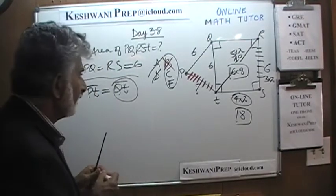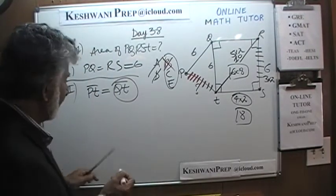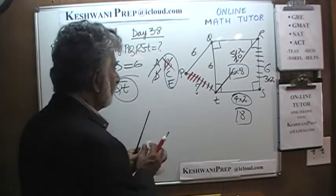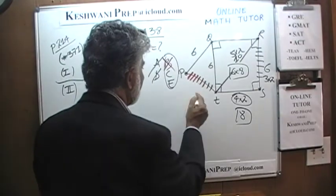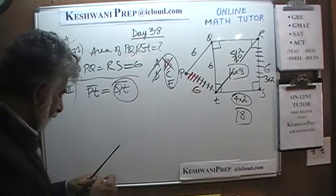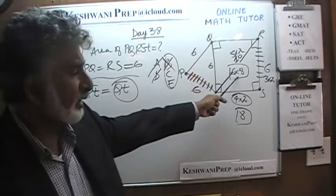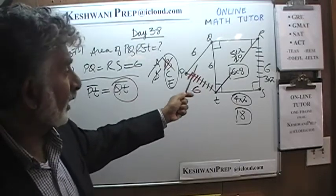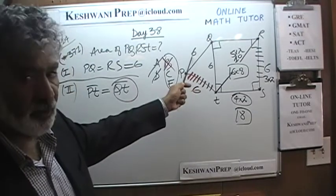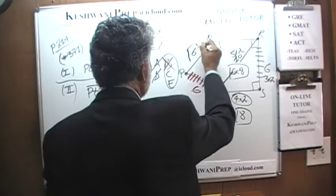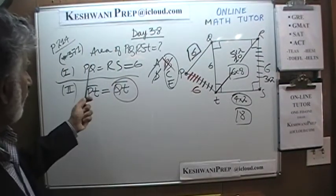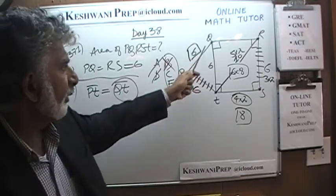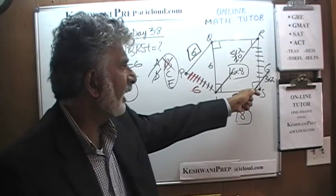But when we put the two statements together, we can make progress. Now we know PT is the same as QT, which means this question mark turns into a 6. From the first statement we already had the area of the rectangle. Now we can figure out the area of the triangle. This triangle turns out to be equilateral — this side is 6, this side is 6, this side is 6. PQ is given as 6, and RS equals PQ so RS is 6.